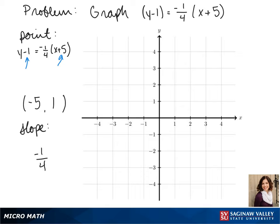And our number out in front of x minus x1 is our slope, so our slope is negative 1 fourth.